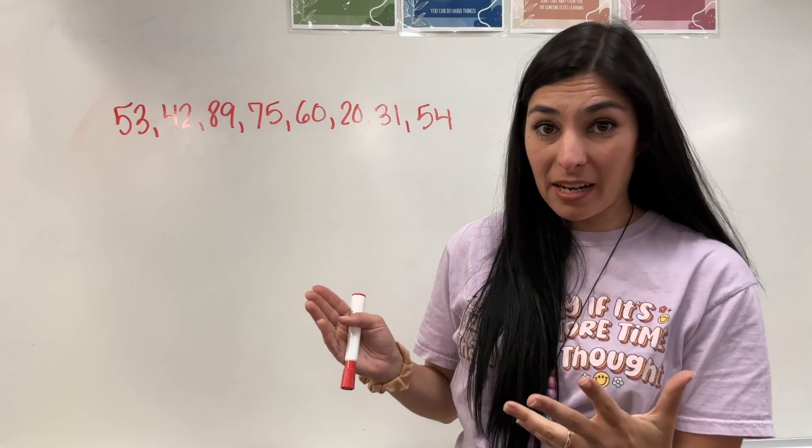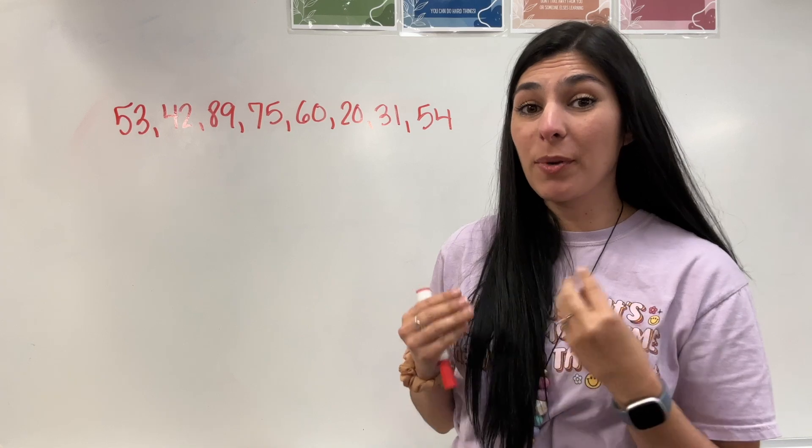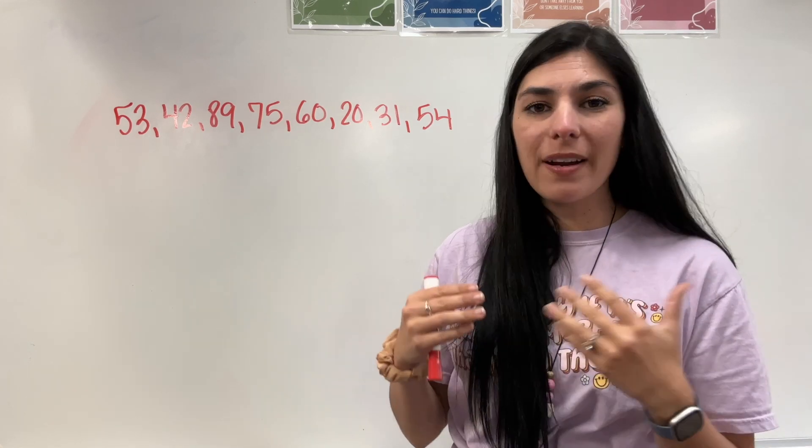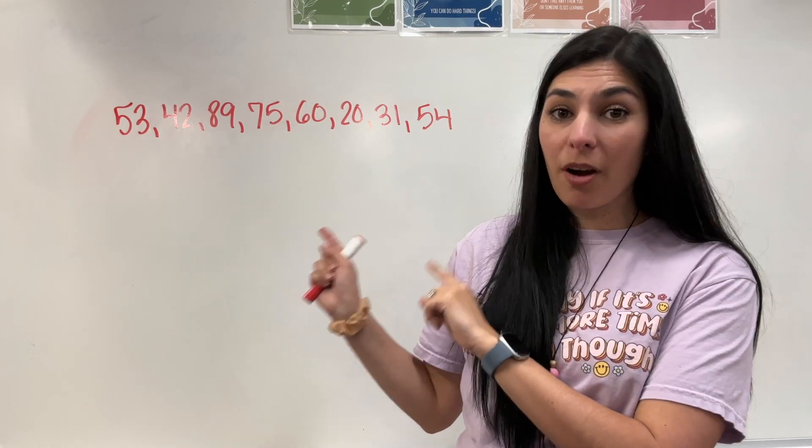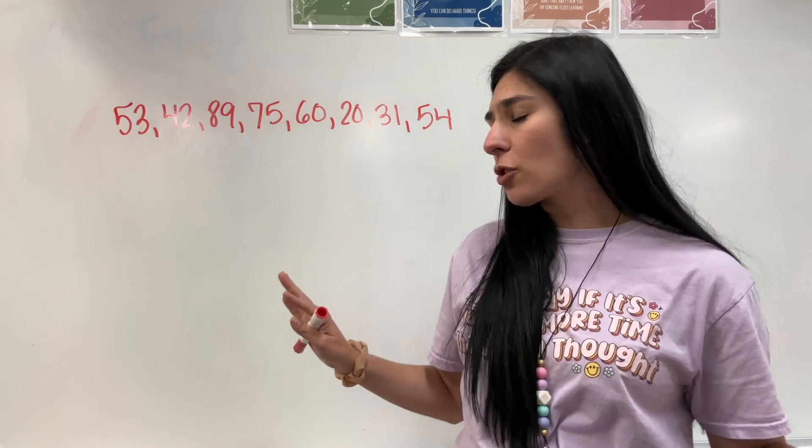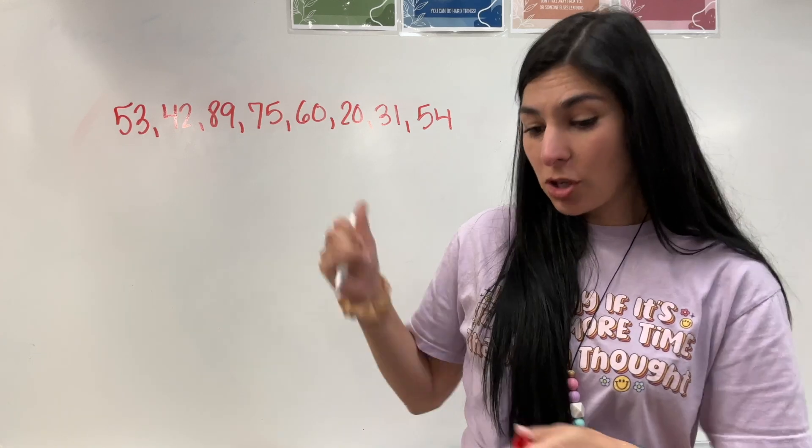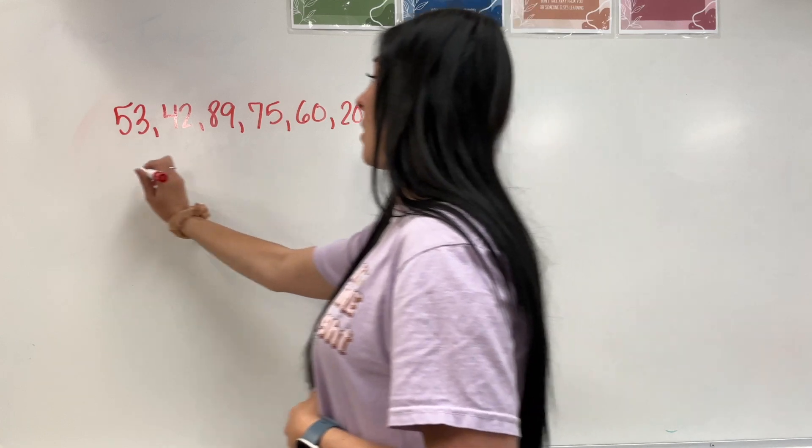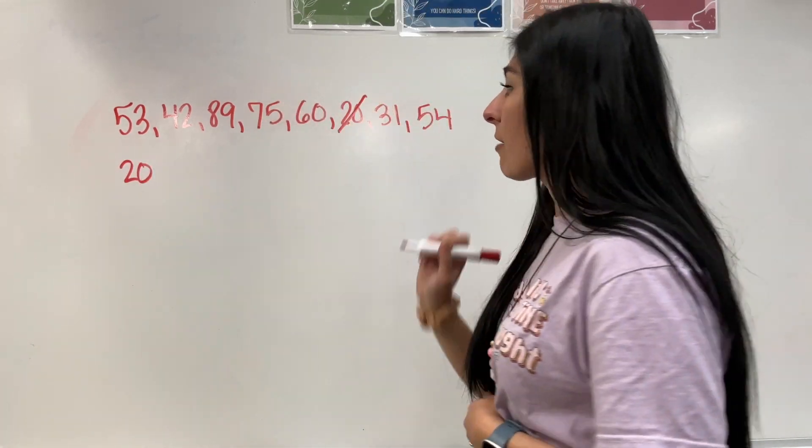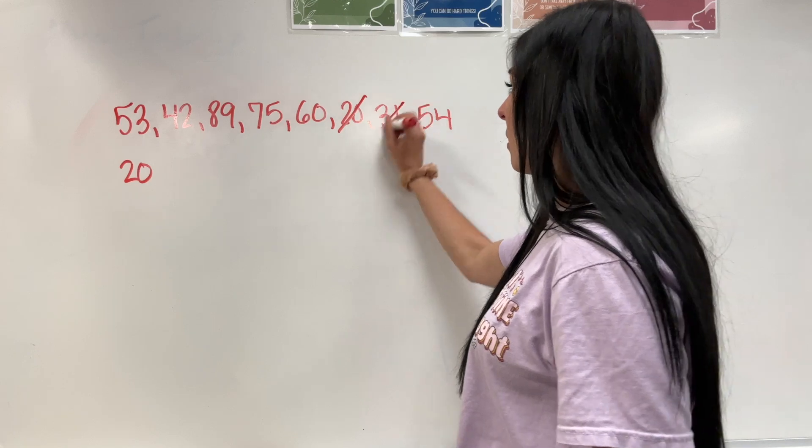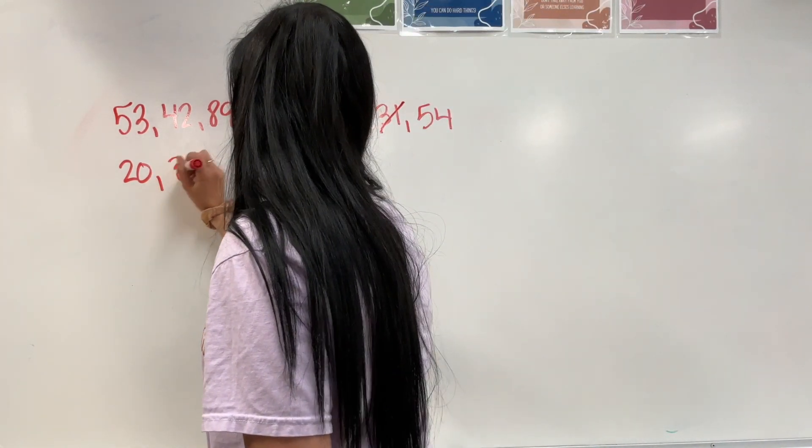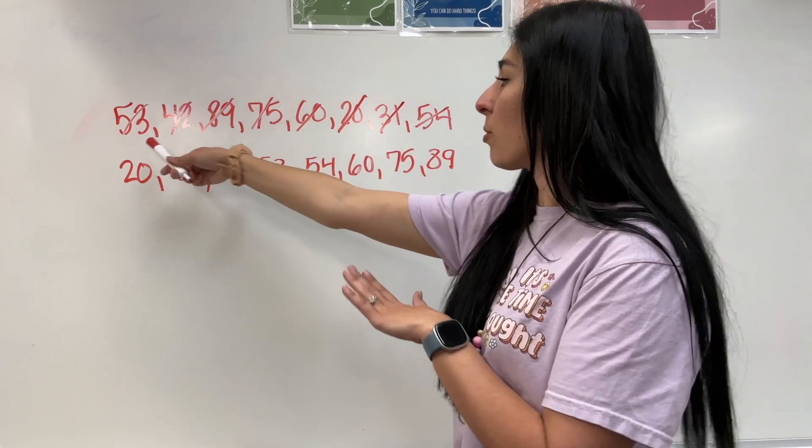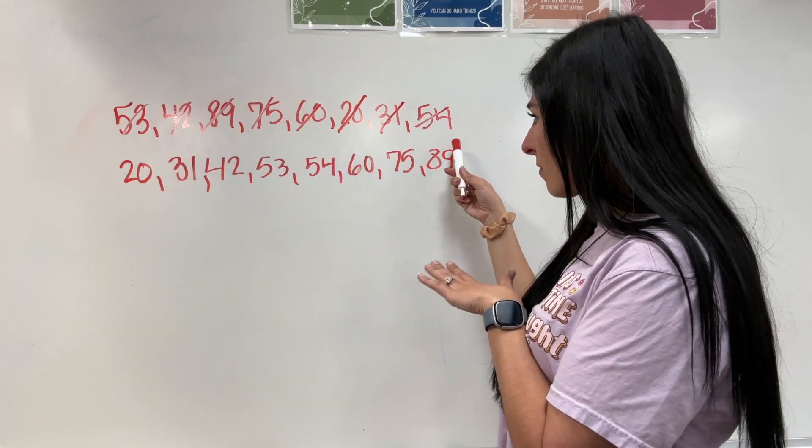Here's our first set of data. When we're going to do a box plot, we're working with median, finding the big median and then the baby medians. In order to find a median at all, we're going to put these numbers in order from least to greatest. That is the major step one. I'm going to look for my smallest number, 20. I'm going to write it and cross it out so I know I didn't forget it. 20, 31...